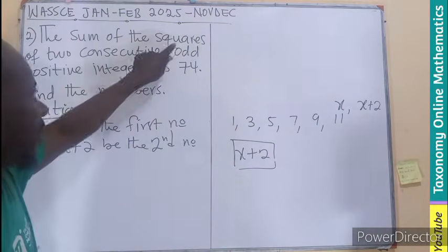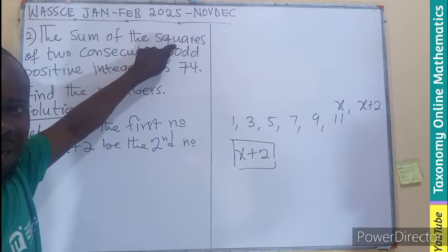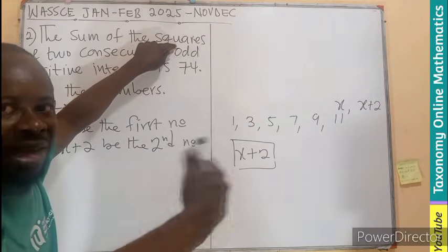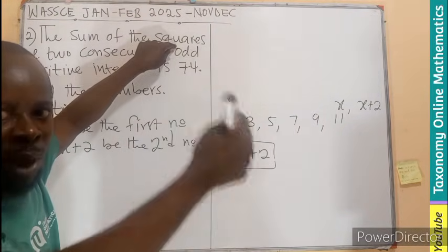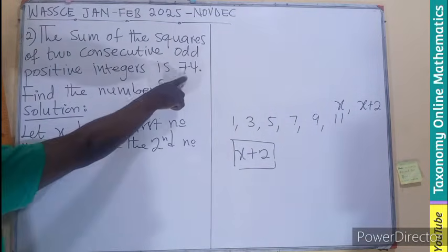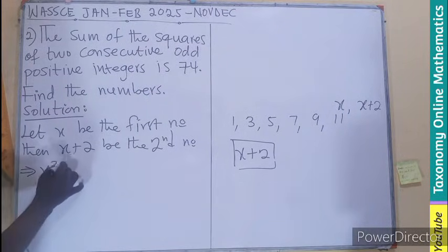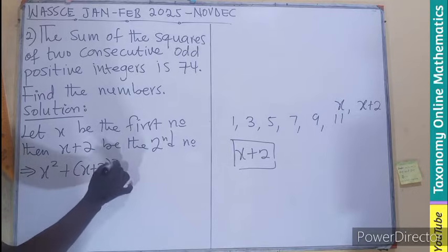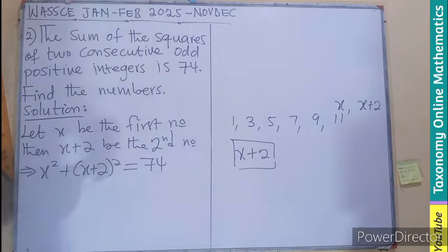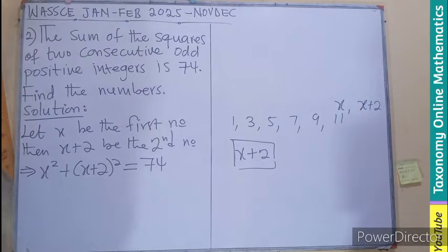But there is a condition here — we say the sum of the squares. A square is a number multiplying itself, or raised to the power of 2. So the first number squared plus the second number squared equals 74. This means X squared plus (X plus 2) squared equals 74, giving us the equation described by the problem.